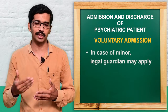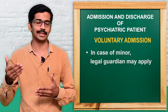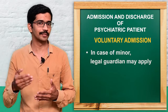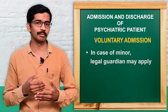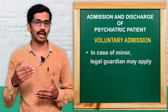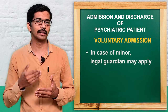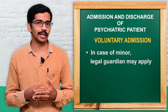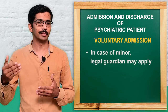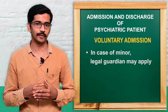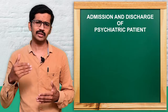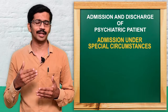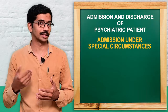In case of a minor — a person less than 16 years of age — the guardian or parents can approach the medical officer and the same procedure will be followed. The second type is admission under special circumstances.